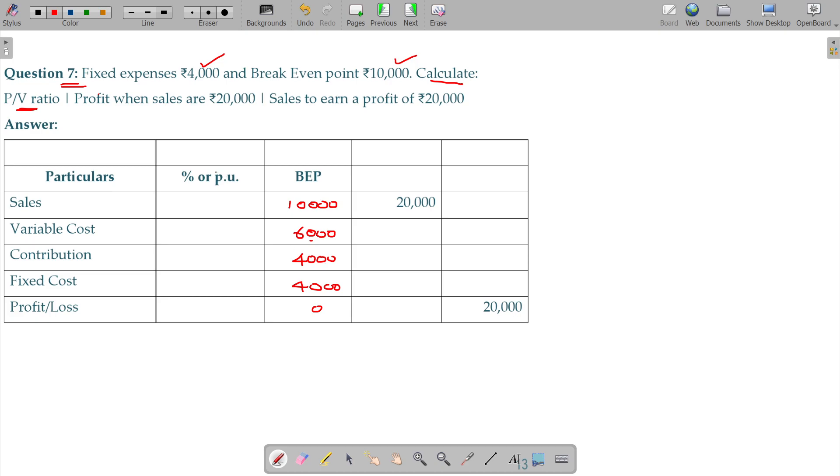10000 rupees. So this will be 40 percentage. This will be 40 percentage. This will be 40 percentage. Is that okay?